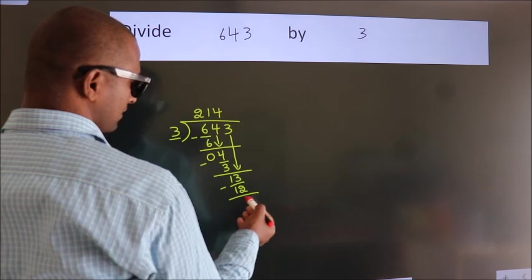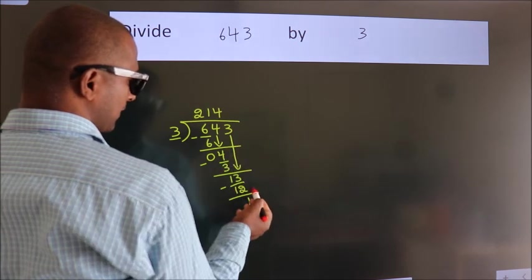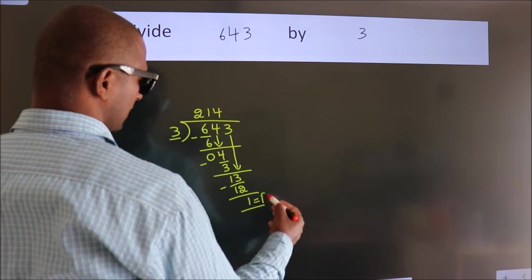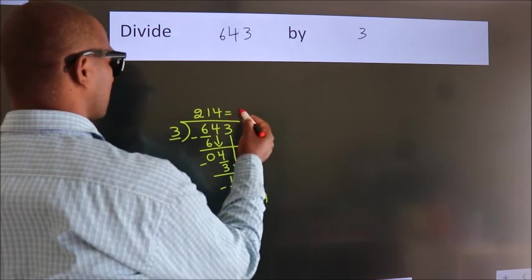After this, there are no more numbers to bring down, so we stop here. This is our remainder, and this is our quotient.